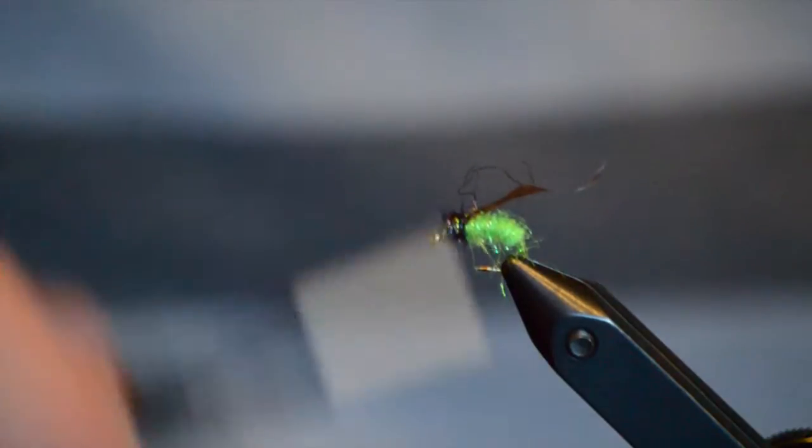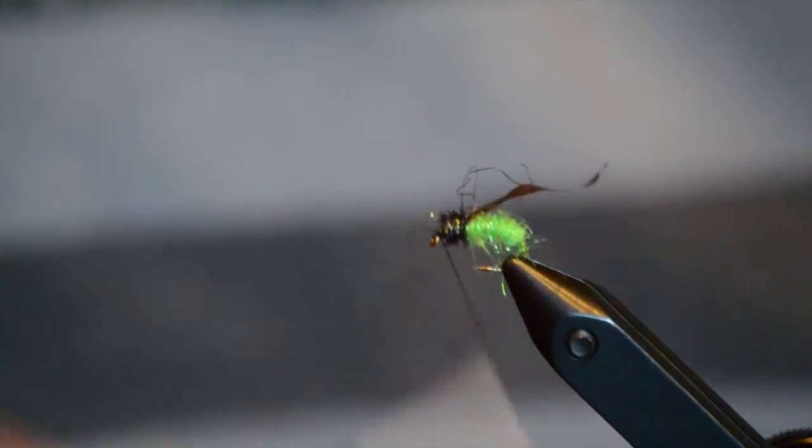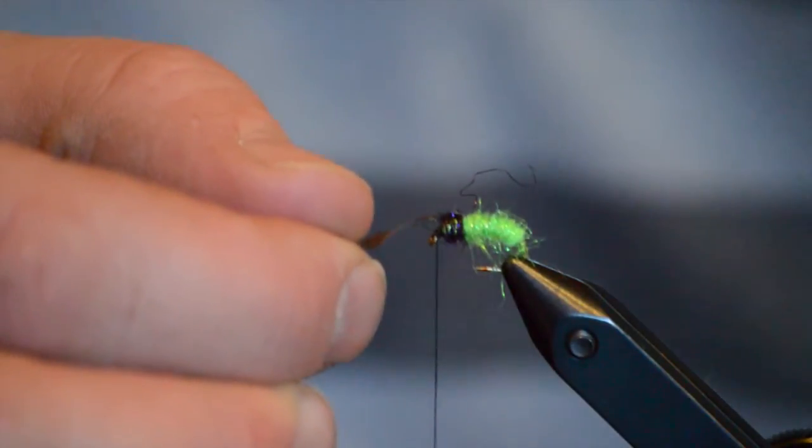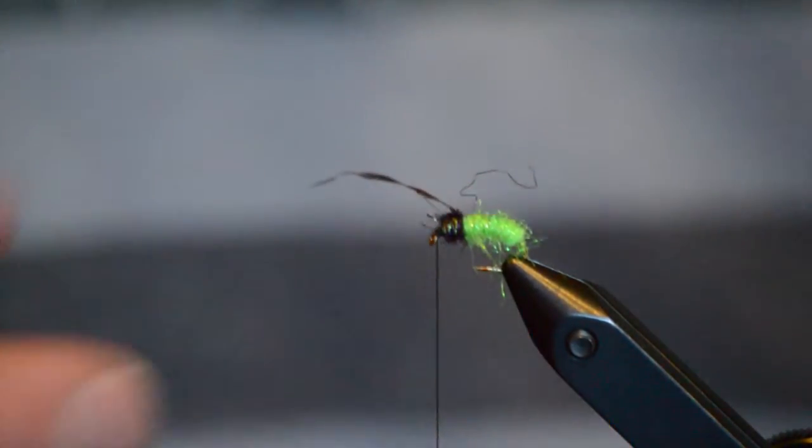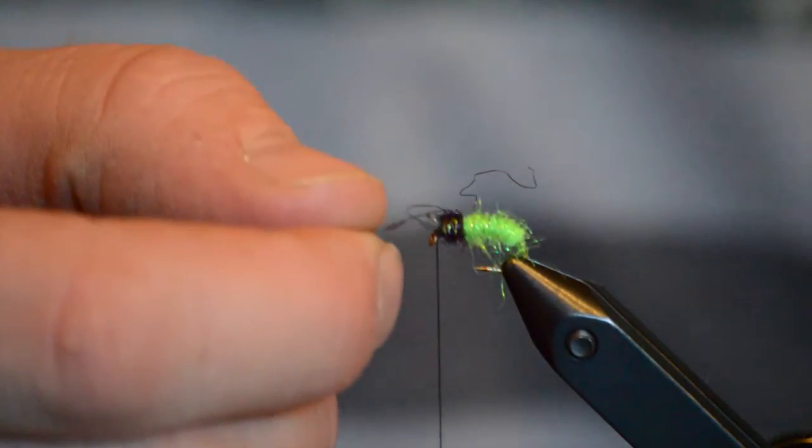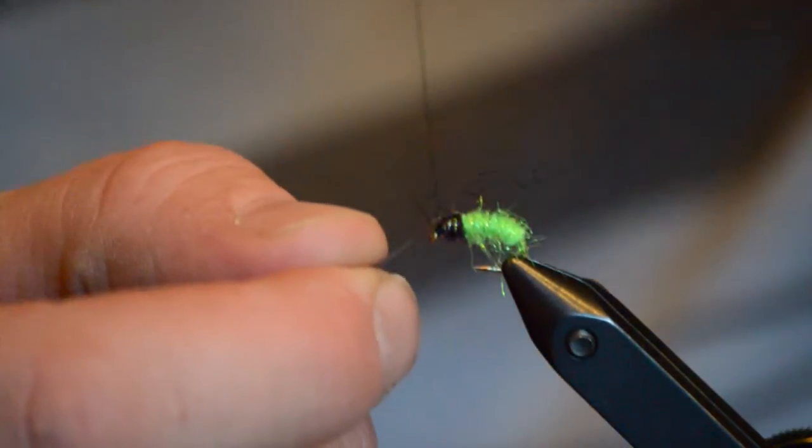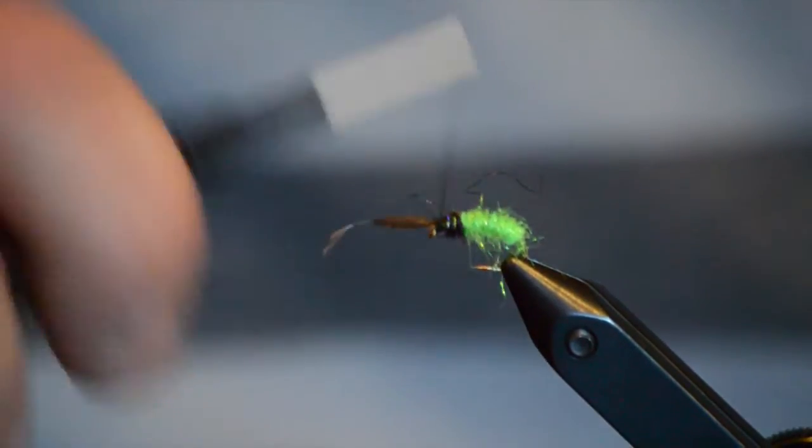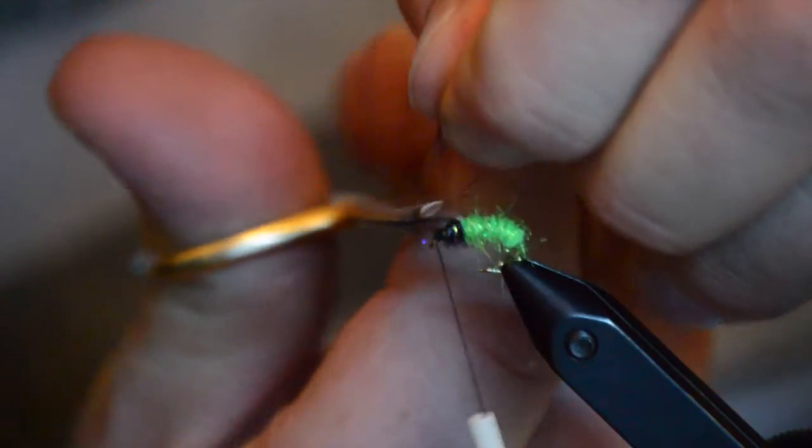Making sure that we've put enough bulk that we've got a nice taper from our abdomen to our thorax. Then we'll take that thin skin and we'll pull it forward and tie it off. And again we want to try and have that thin skin match similarly to the color of the dubbing, just because we're not trying to create a wing case. We're just trying to create a sclerotized pronotum. So we'll pull it over and clip the excess.